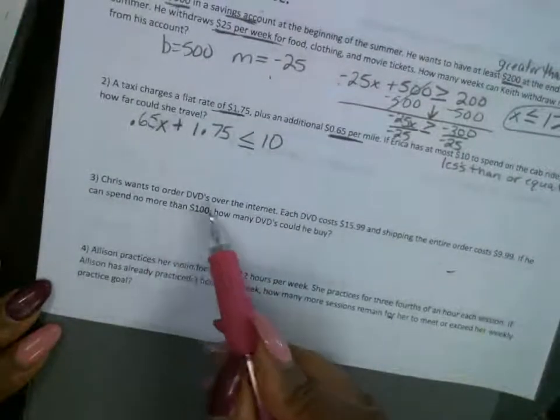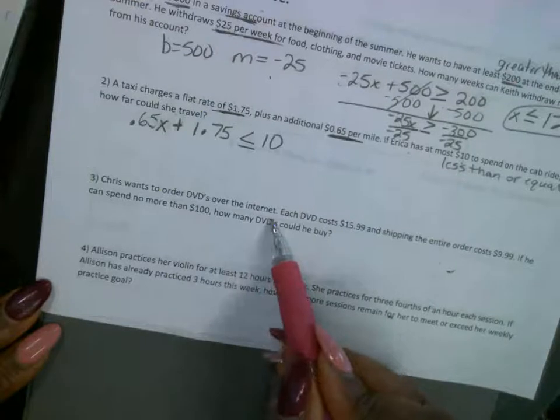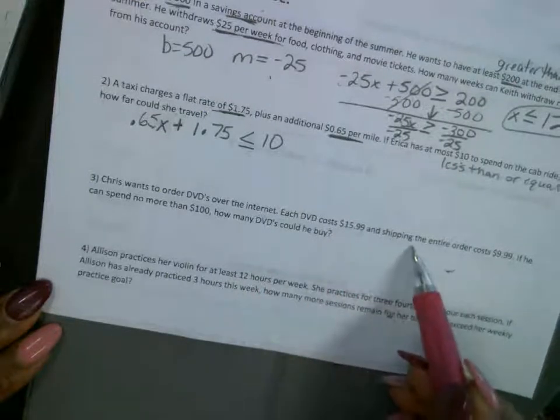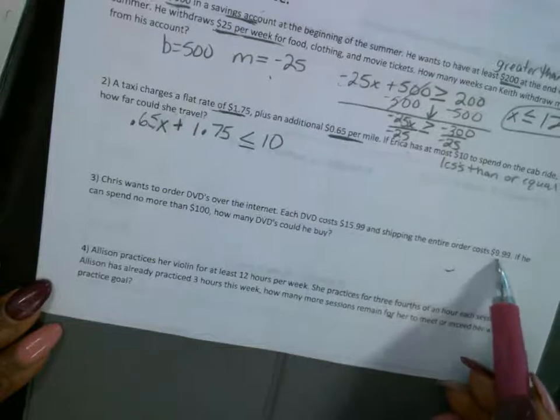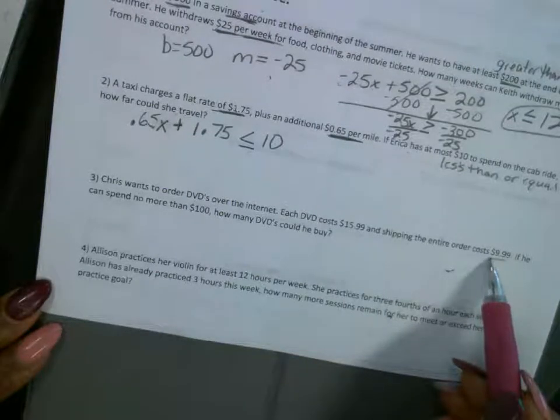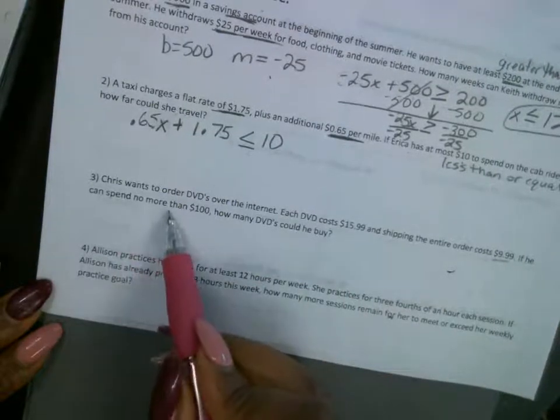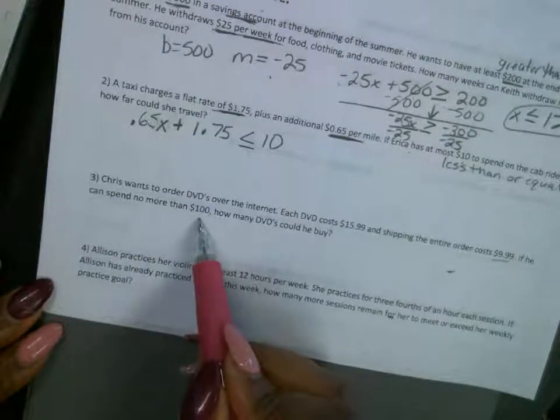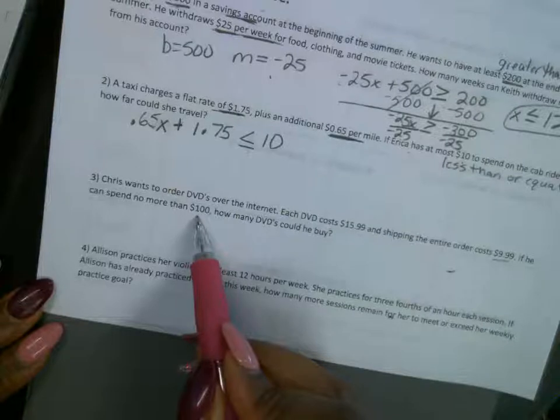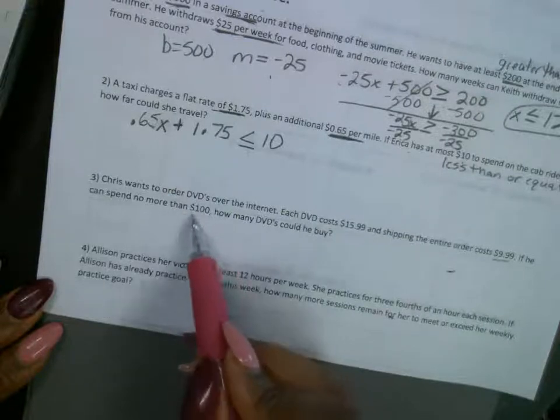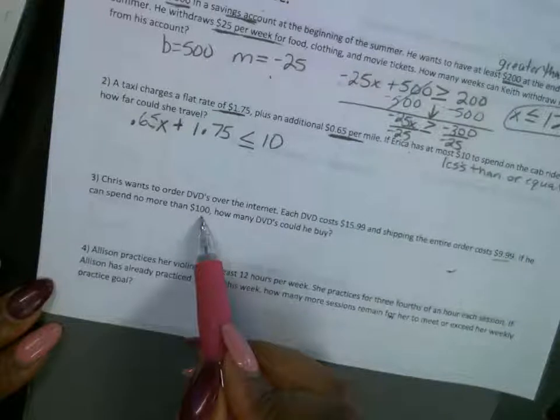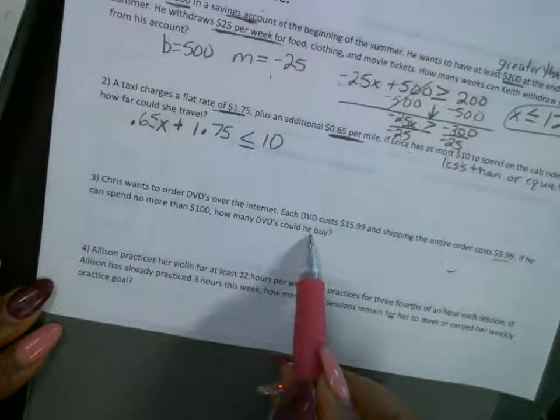Chris wants to order DVDs over the internet. Each DVD costs, look at what it costs, and the shipping for the entire order costs this amount right here. All right. If he can spend no more, he cannot spend any more than $100. He cannot go over $100. What inequality is that going to be? All right. How many DVDs could he buy?